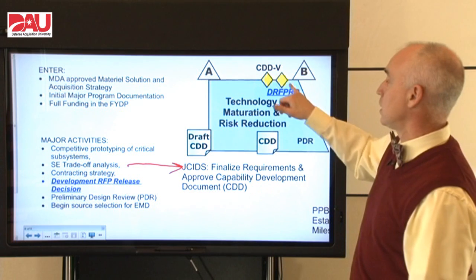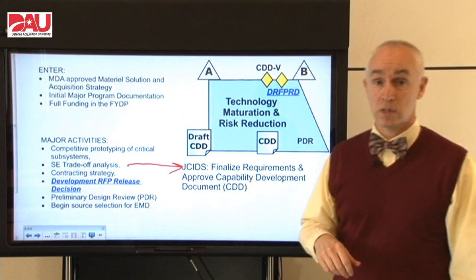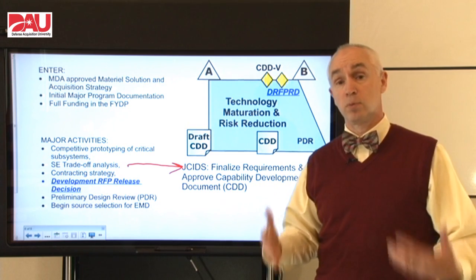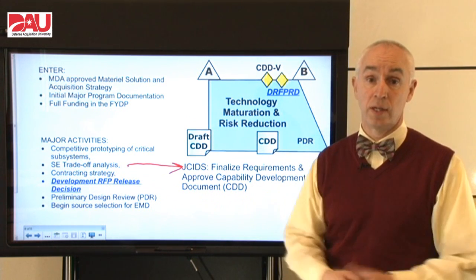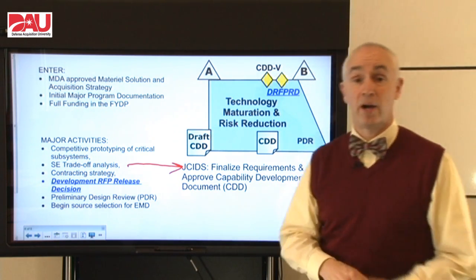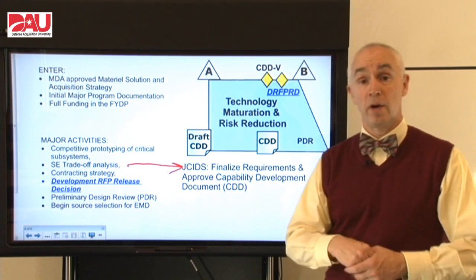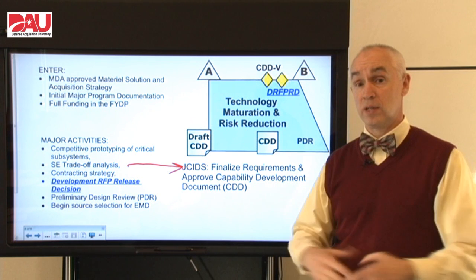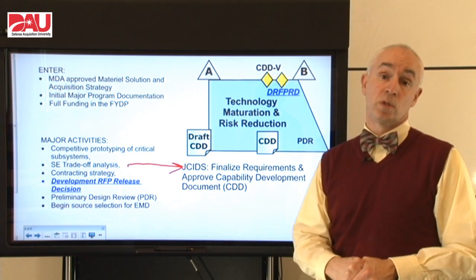Then we've got this big decision: after the CDD is validated by the user, we have a Development Request for Proposals Release Decision, or DRFPRD. That is new, and it does just what the acronym says — it gives us permission to release a request for proposals. As we're going along, we've got to put together a contracting strategy to get that permission, as well as update most of our major program documentation. This is considered by our leadership to be the key decision in the overall life cycle of the program, because once you put requirements out in writing that will go into a contract, there's not a lot you can do to make major changes without major perturbations in your program.